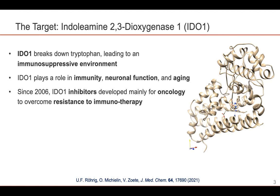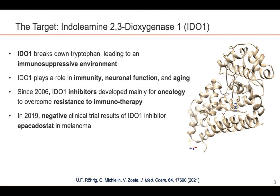It has been shown that this works very well in preclinical models. There's a strong biological rationale behind it, and everything looks great. Until about 2019, the first results of a clinical trial of an IDO1 inhibitor, epacadostat, was shown to be inefficient in melanoma. So this put a big question mark on the field, but on the other hand, it's still a very active and vibrant field of research, and new aspects of IDO1 biology are continuously being discovered.